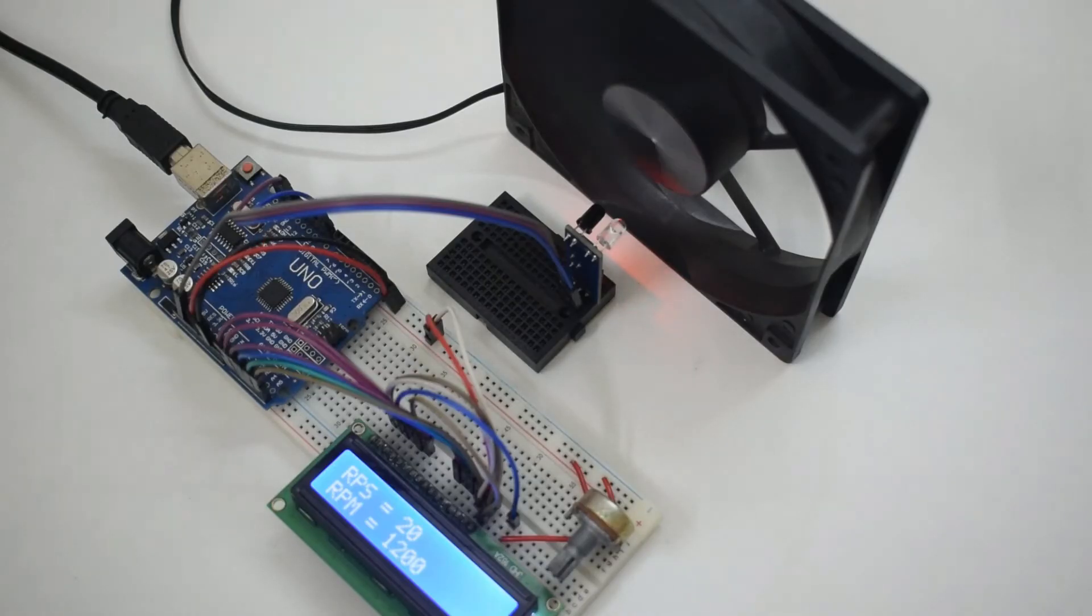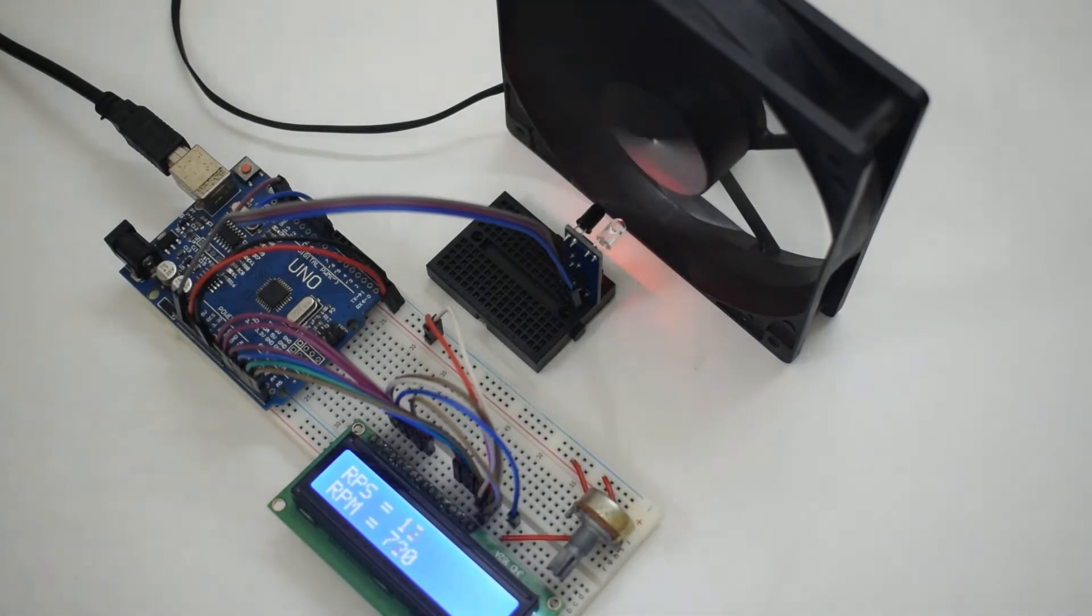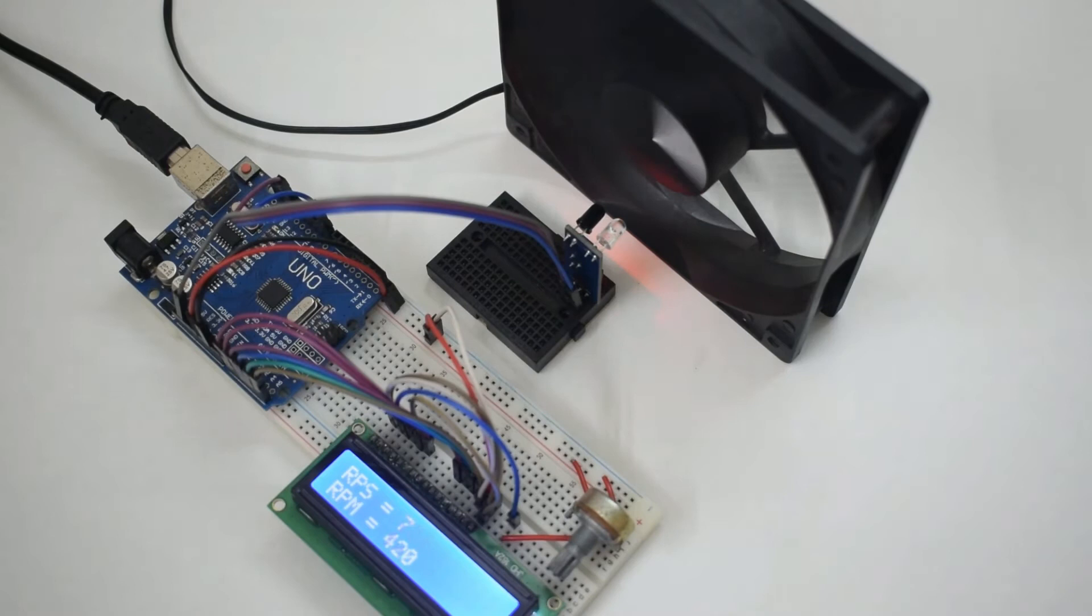And voila! Our tachometer does a pretty good job at measuring the speed of the fan. We can see that the RPM decreases when I reduce the input voltage from 12.6 to 8.4V. Now I am providing the fan with 4.2V and we can see the RPM on the LCD.